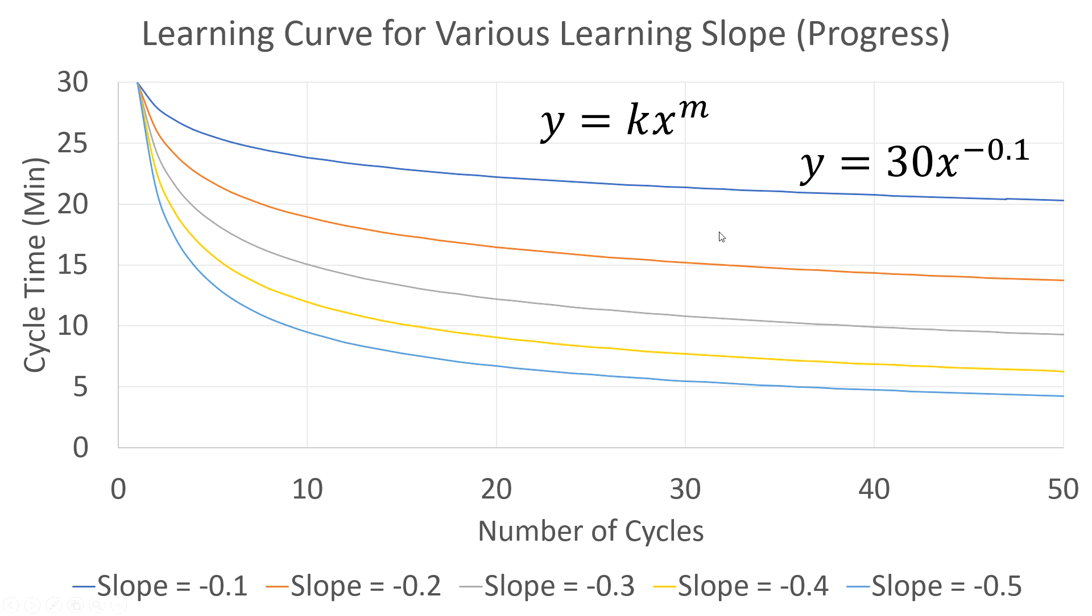So this slope parameter m - these different curves are different types of learning curves. For the oil change, probably this one with a very low slope parameter, compared to something that can be always improving. These learning curves can be calculated. We'll show an example of how to do calculation of these slopes.